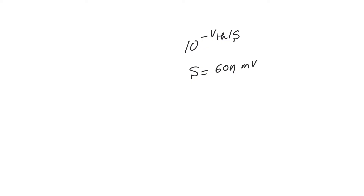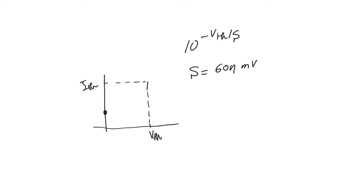We reached the conclusion that at threshold voltage, the amount of sub-threshold current flowing is equal to I_threshold times W over L. What we are interested in is the value of current we will observe at V_gs equals zero, which we call I_off — the off-current. The amount of voltage between V_threshold and zero volts is the shift we observe in the current, and S represents the amount of voltage needed to reduce the current by tenfold.